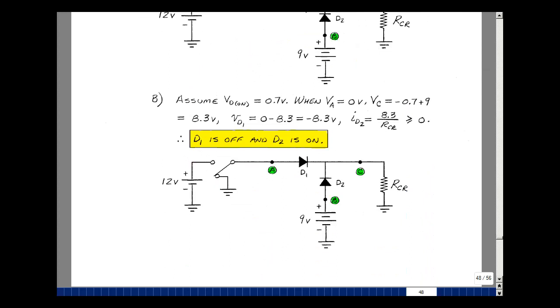Suppose there is a power failure, and our voltage now drops to 0 volts. I now have the 9-volt battery. And again, current wants to flow from the largest battery to the smallest. In this case, I have a 0-volt battery here. So current would want to flow this way and want to flow this way. I'm going to guess that D2 is on and D1 is off.